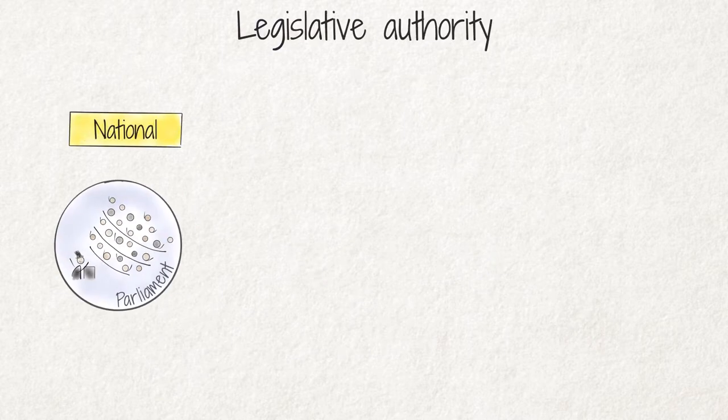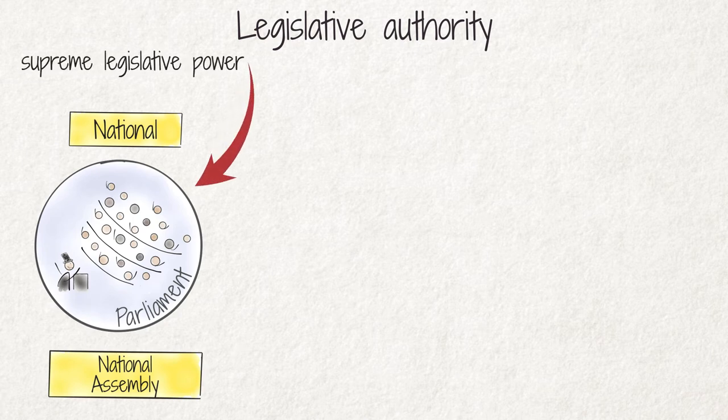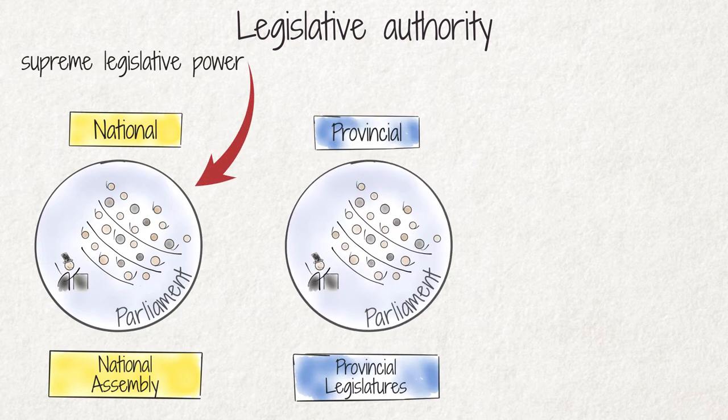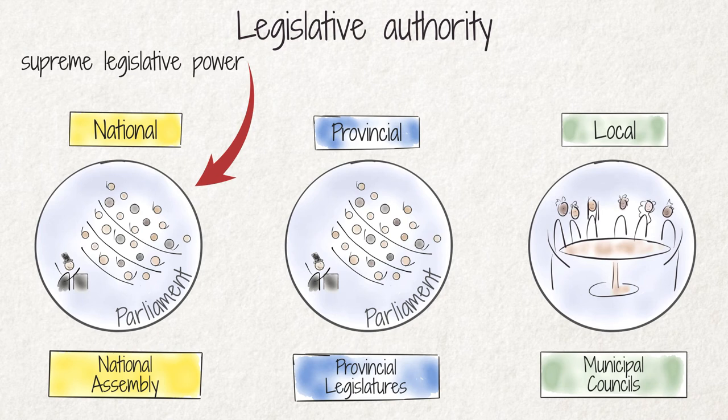The legislative authority in the national sphere of government is vested in parliament, which is the supreme legislative power in the country. At provincial level, the legislature is represented by the provincial legislatures and, in the local sphere, by the municipal councils.